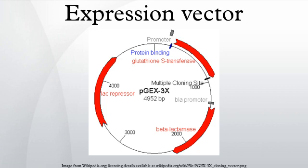Low level of constitutive protein synthesis may occur even in expression vectors with tightly controlled promoters. After the expression of the gene product, it is usually necessary to purify the expressed protein. However, separating the protein of interest from the great majority of proteins of the host cell can be a protracted process. To make this purification process easier, a purification tag may be added to the cloned gene.